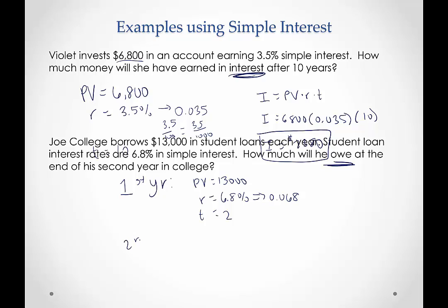Then the second year, the present value, he again borrows $13,000. The interest rate is 0.068. And this time, if he borrows at the beginning of the year, now it's the end of the year, the time would be one year. So we had to compute these separately and then we'll add them back together.